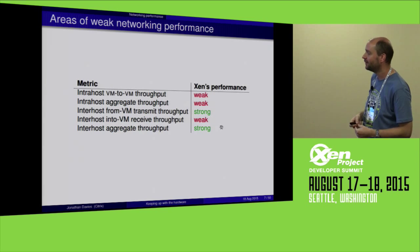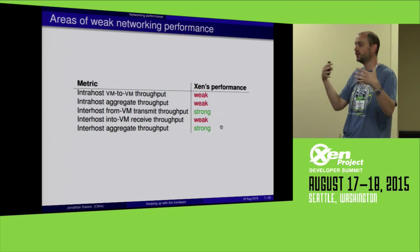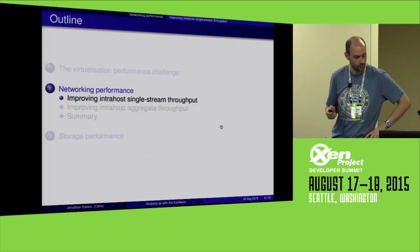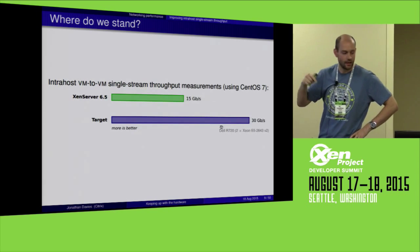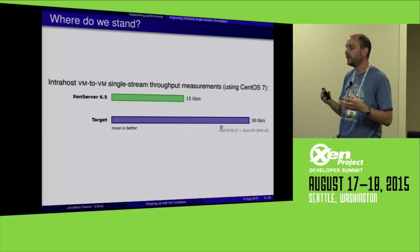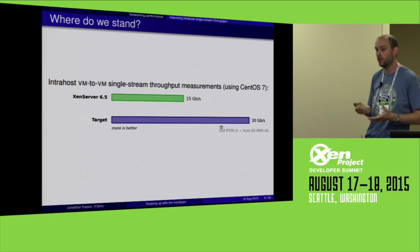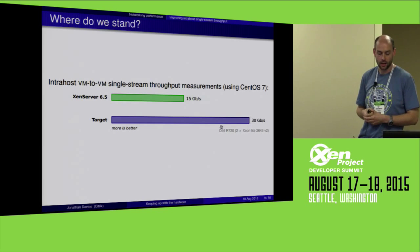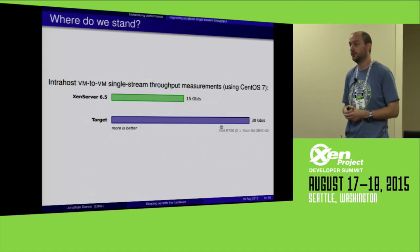I'm going to spend most of my time talking about the first category: intra-host, VM to VM. So I've got two VMs talking to each other on the same host. For a single TCP stream between two VMs on the same host, I've got measurements from a pair of CentOS 7 VMs on reasonably modern hardware and we get 15 gigabits per second between them. Not bad, but where I think we should be on this kind of hardware is about double that. So we've got some work to do.